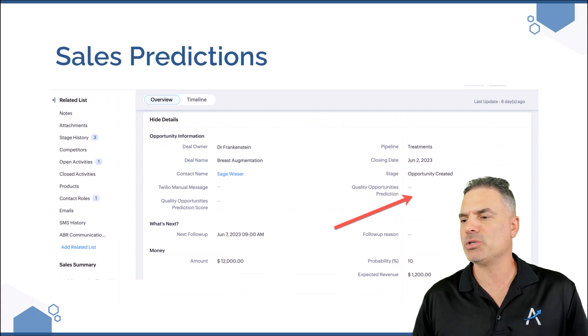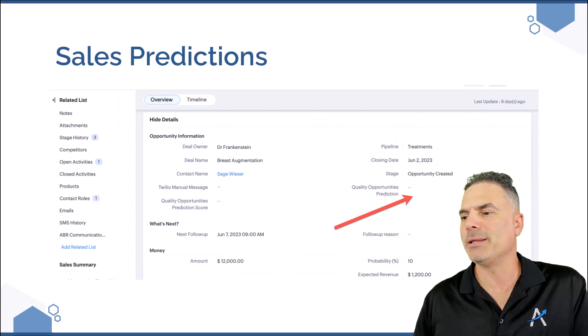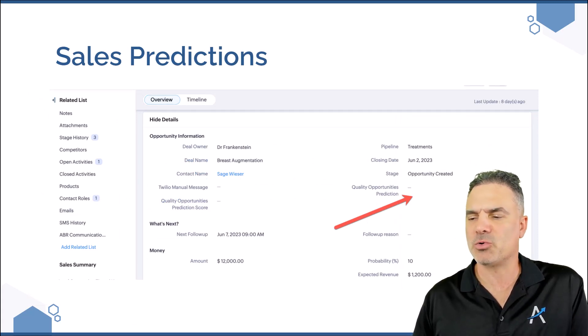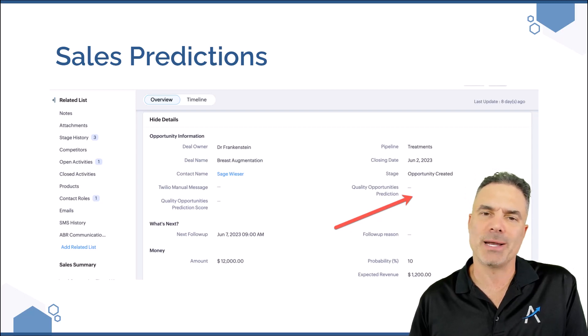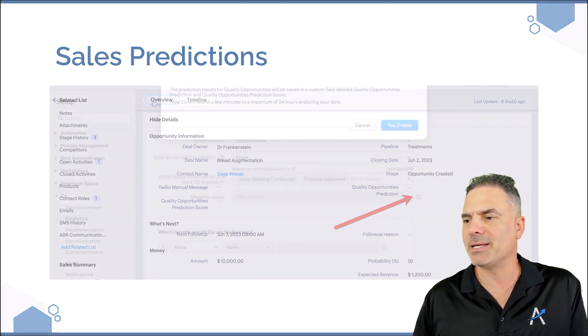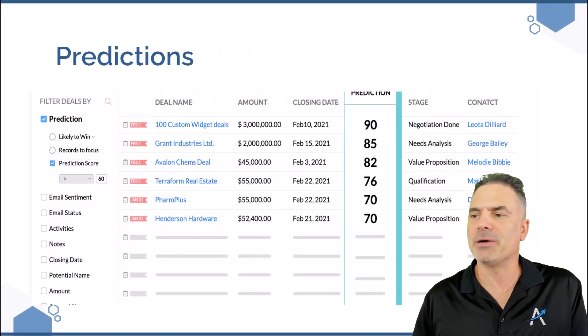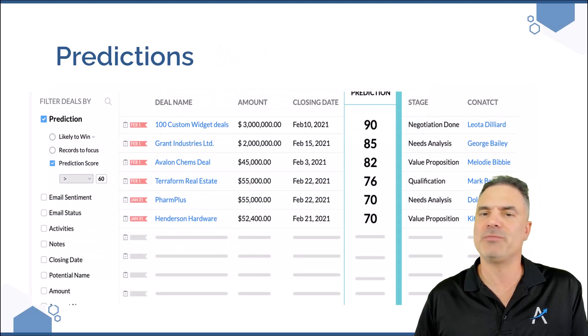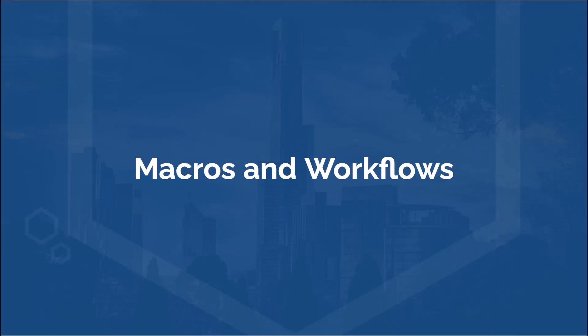On the opportunities module, you will have a new quality prediction score which will be updated automatically by the system, and that will also appear in the prediction column if you choose to show it. Next, we are going to macros and workflows. Macros and workflows are sets of automations configured in the system — usually you do this manually, but in this case ZIA can do it for you.